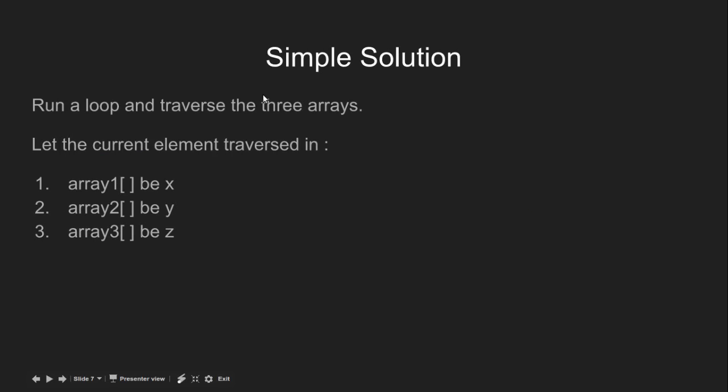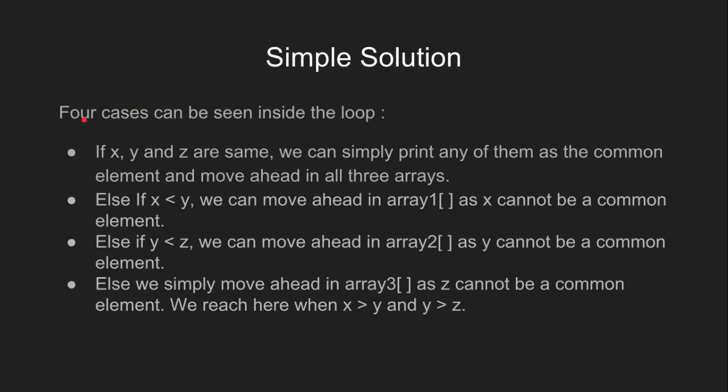To find common elements in three arrays, we run a loop and traverse the three arrays. Let the current element traversed in array 1 be x, in array 2 be y and in array 3 be z. Inside the loop that we are working on, there can be four cases. Case 1, when x, y and z are all the same. In this case, we can simply print any of them as the common element and move ahead in all the three arrays.